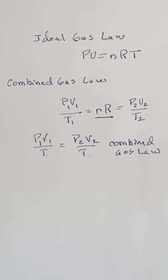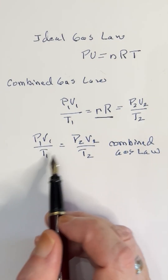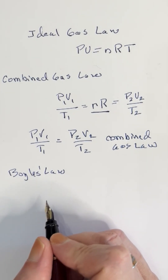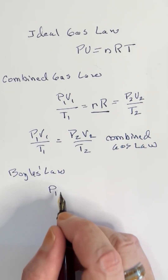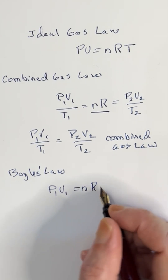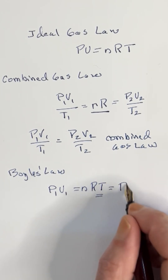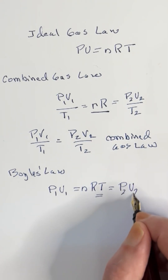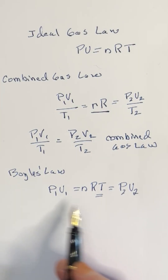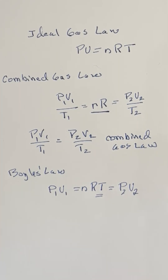And this is called the combined gas law. Pretty simple, right? Another thing that we can do is hold some of these factors stable. For example, with Boyle's law, we take pressure 1 times volume 1 equals nRT, hold temperature stable, and that will equal pressure 2 times volume 2. So with Boyle's law, we use this to relate changes in volume and pressure without a change in temperature.